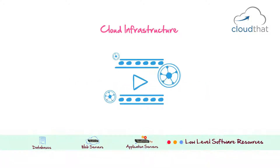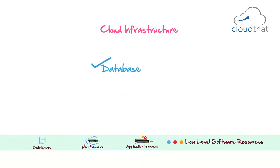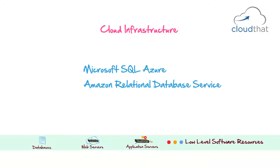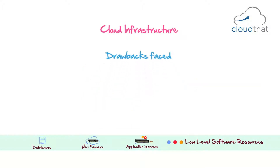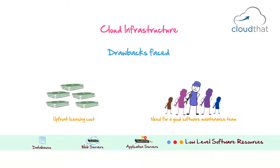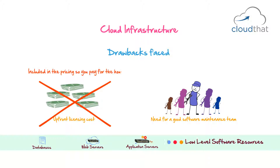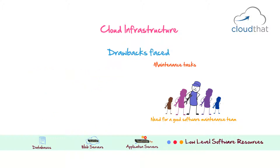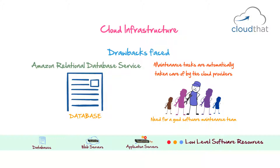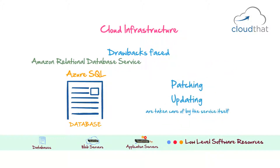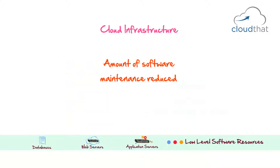At the low-level software resources layer, we have databases, web servers, and application servers. In the cloud, services like Microsoft SQL Azure, Amazon Relational Database Service, and Google App Engine address this layer. The drawbacks were upfront licensing costs and the need for a good software maintenance team. Both are resolved: licensing cost is included in pay-per-hour pricing with no long-term contracts, and maintenance tasks like patching and updating are automatically taken care of by the cloud provider, drastically reducing the software maintenance burden.